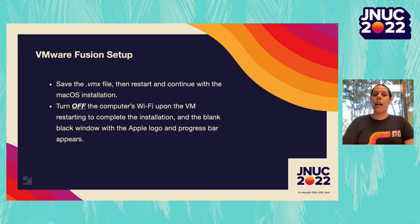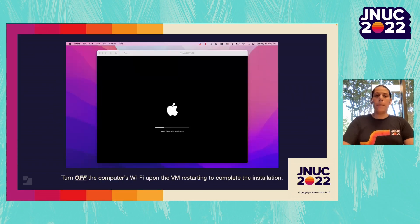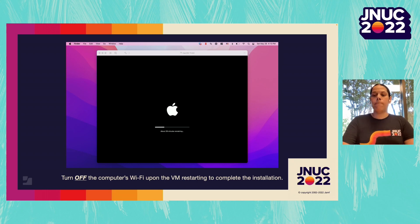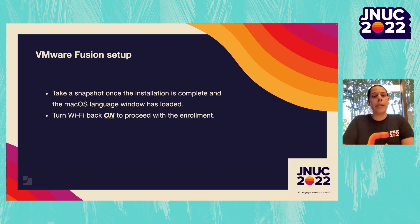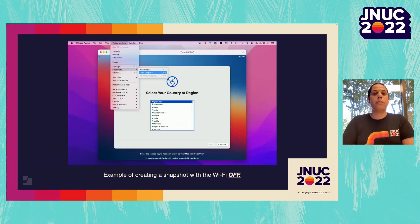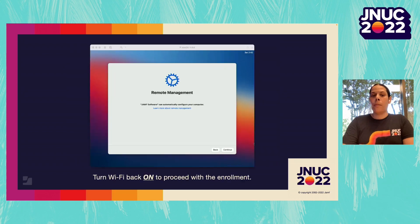After making the edits to the .vmx file, save it and restart the VM to continue the macOS installation. Similar to Parallels, once you see the black screen with the Apple logo and the timer for the installation, turn off the Wi-Fi of the computer. The macOS installation will complete — this is to avoid the virtual machine from communicating to the internet and the server before intended, and it will ensure the cleanest snapshot. Once the macOS installation is complete, take a snapshot, then turn Wi-Fi back on and proceed with enrollment as normal.